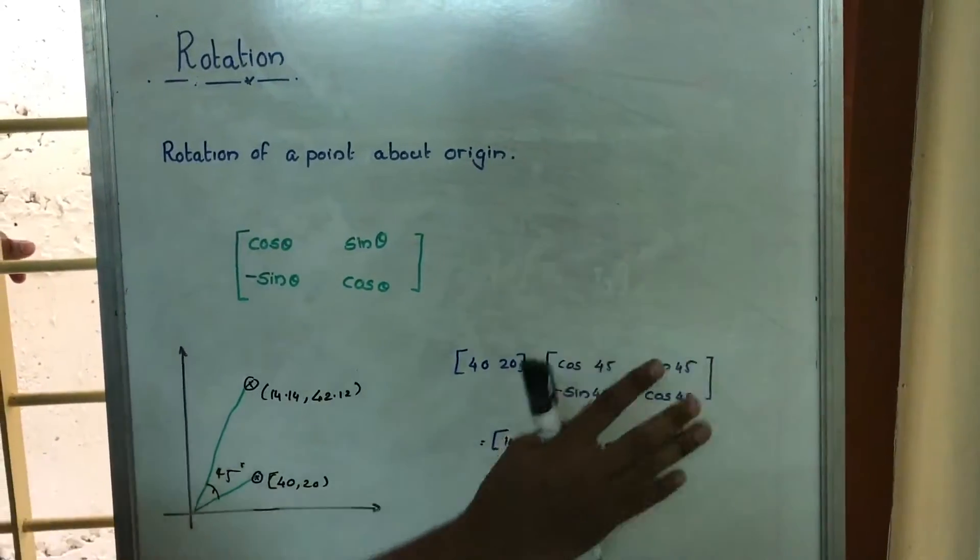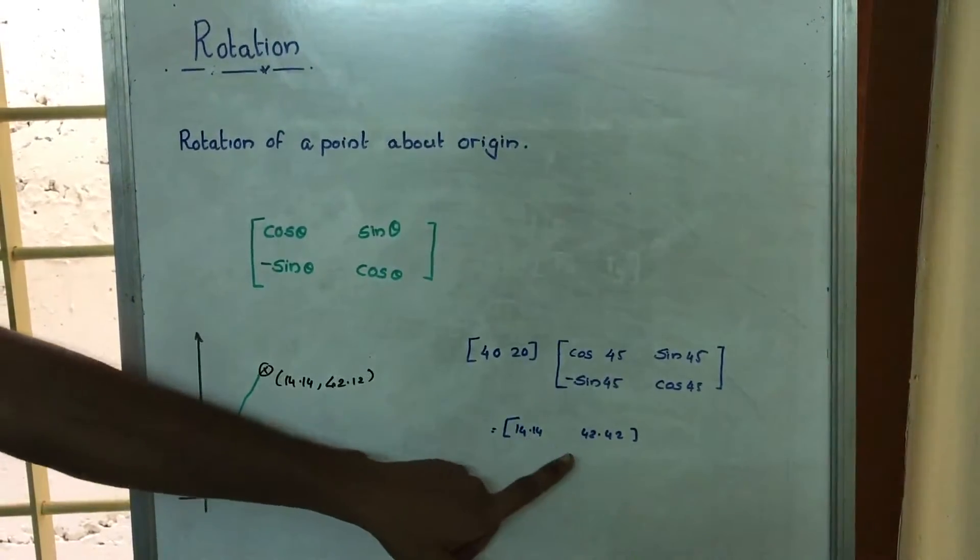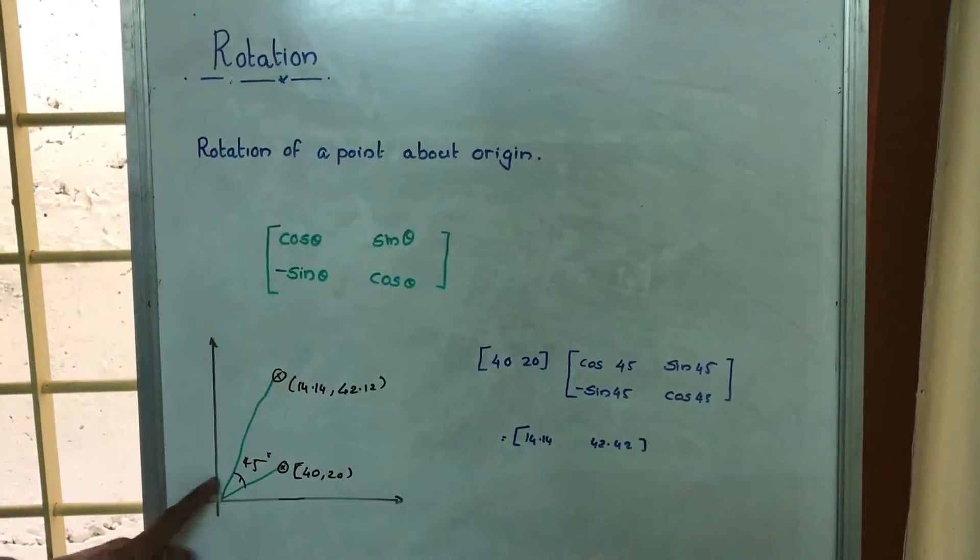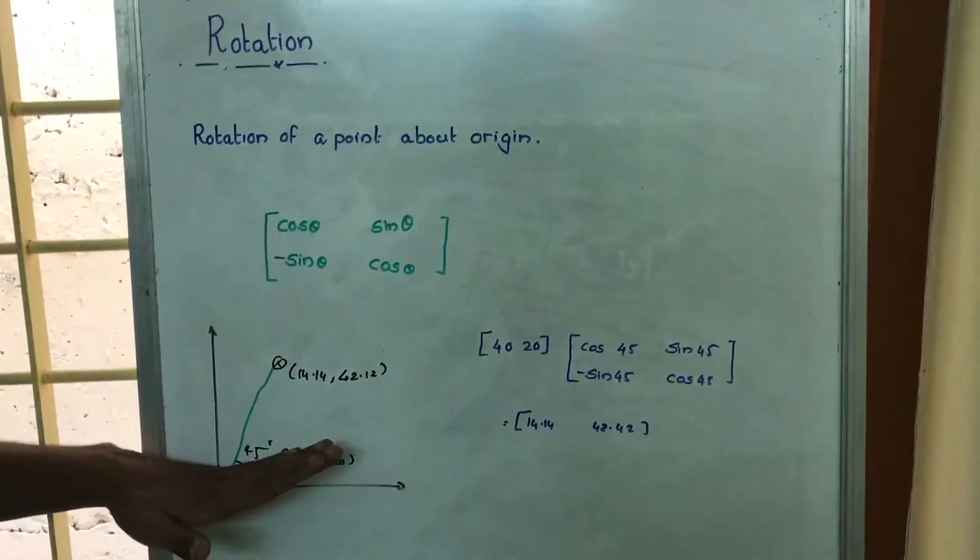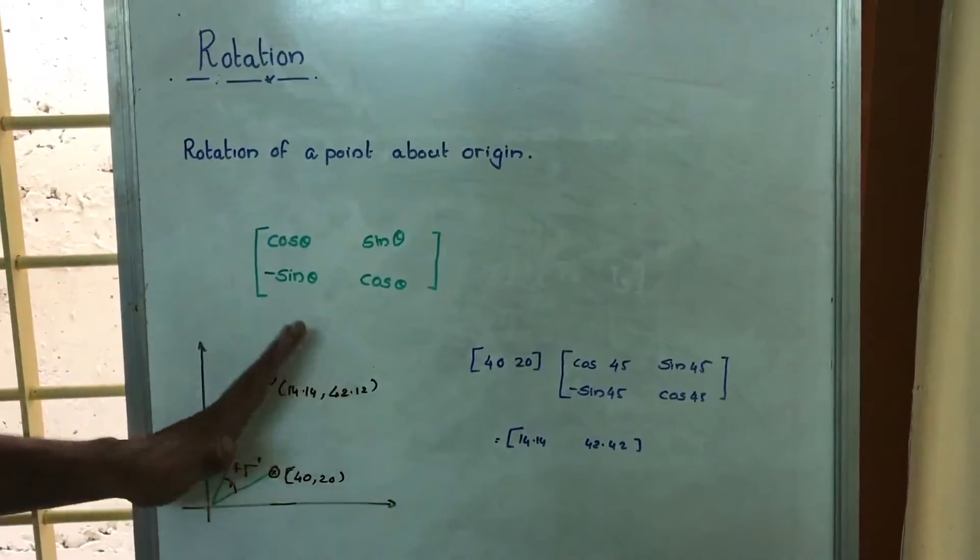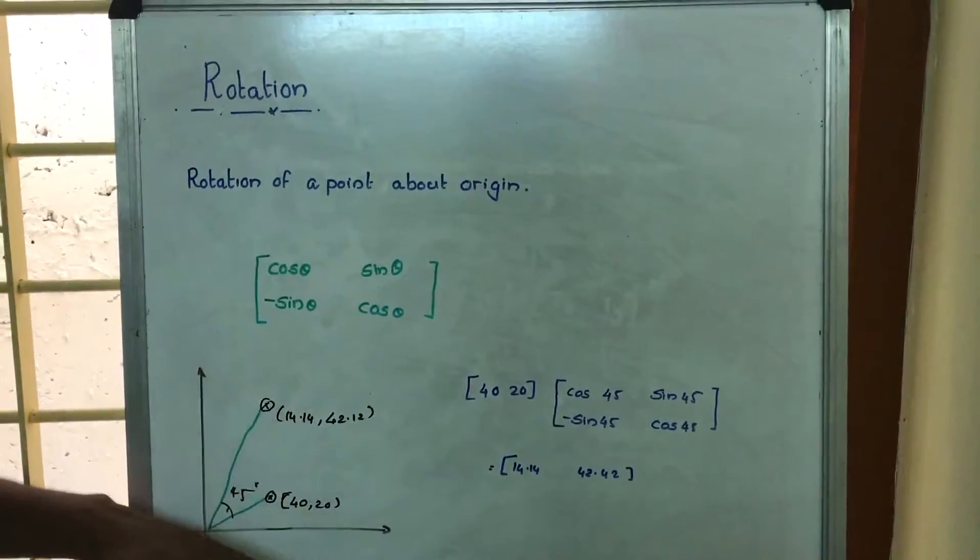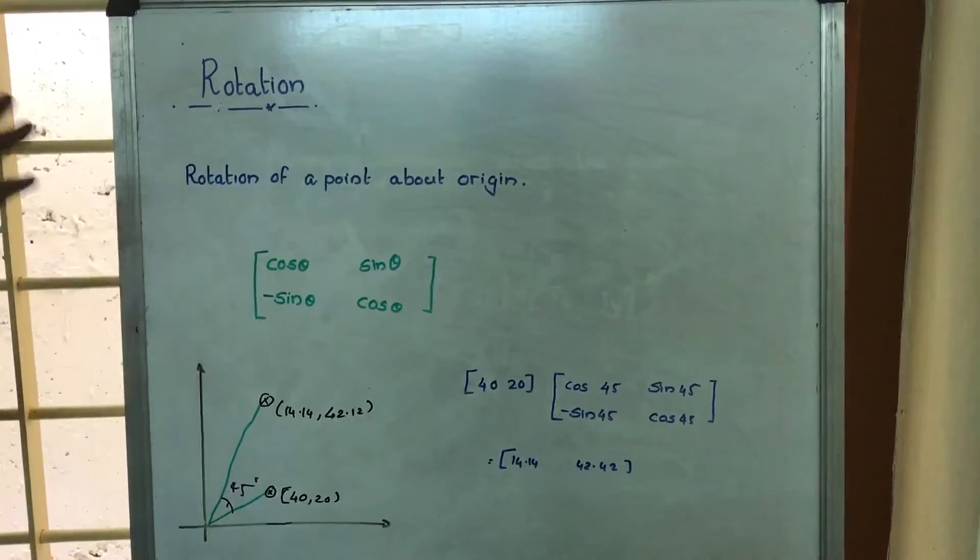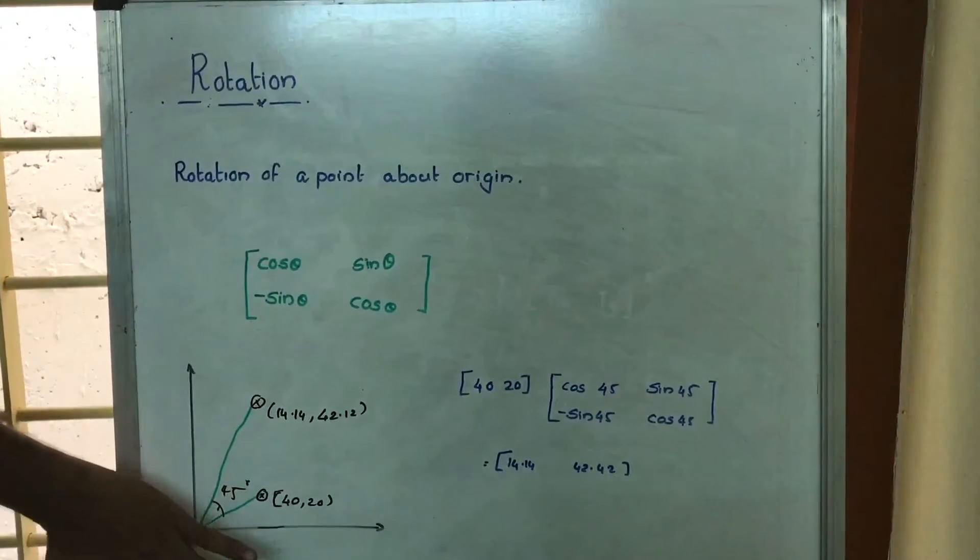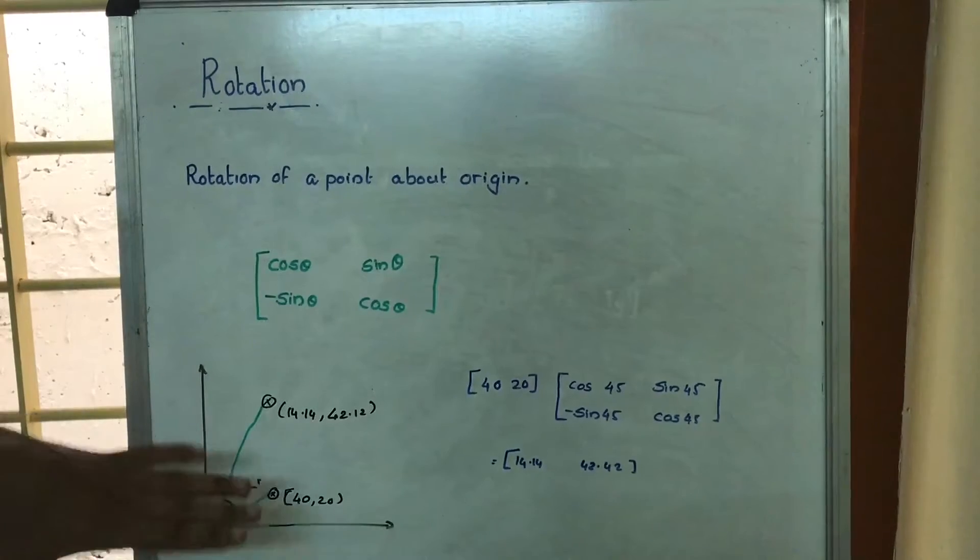And we are able to obtain this point. On plotting the point, we can observe that we have rotated this particular line by an angle of 45 degrees. So we have rotated it 45 degrees in the anticlockwise direction.